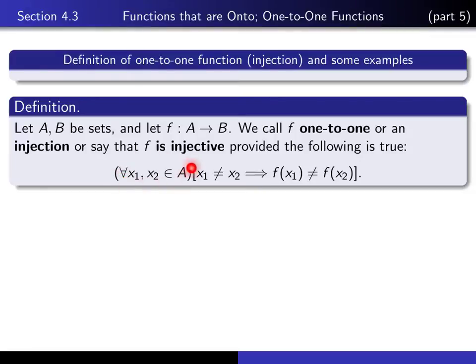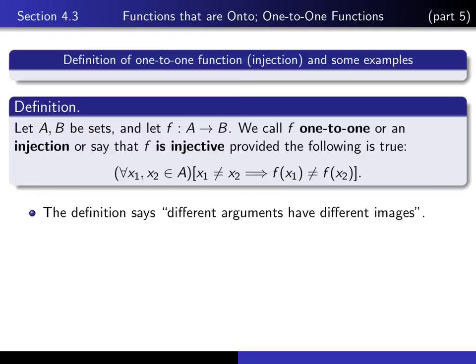Provided the following is true: for any pair of points in the domain, if X1 and X2 are different, then f(X1) is different from f(X2). So it's basically saying that different X values have different images.